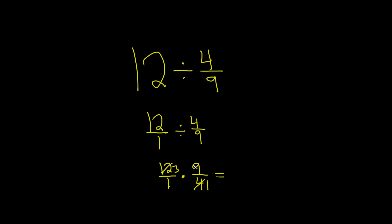Now we can multiply. You multiply straight across. So 3 times 9 is 27, over 1 times 1, which is 1.